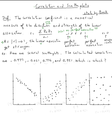Looking at the positive correlations, those two will go to scatter plots B and C. Let's call them A, B, C, and D. We can tell the association in C is stronger — if you draw a line, C is definitely stronger. So C is r equals 0.951, and B is r equals 0.736. Even though both of them are strong, C is stronger.